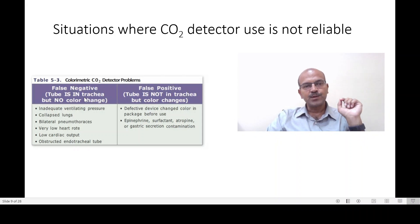What are the situations where you may have a false negative? Inadequate ventilating pressure if the gas movement is not adequate, especially if the lung is very stiff and hasn't opened, if the lung is collapsed, if there is bilateral pneumothorax, there is less air movement, if the heart rate is very low...